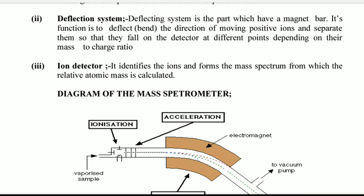It separates them so that they fall on the detector at different points depending on their mass to charge ratio. The major function of deflection system is to deflect the ions according to their mass to charge ratio.